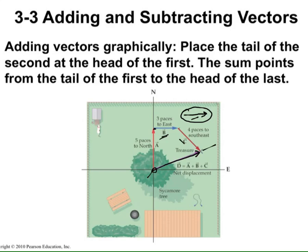Do this for all vectors, then connect the starting position of the first vector to the ending position of the last vector. That connecting vector is the sum of all three vectors. This is called the head-to-tail method of adding vectors — it is one way to add vectors geometrically. The result is your final displacement or net position vector.